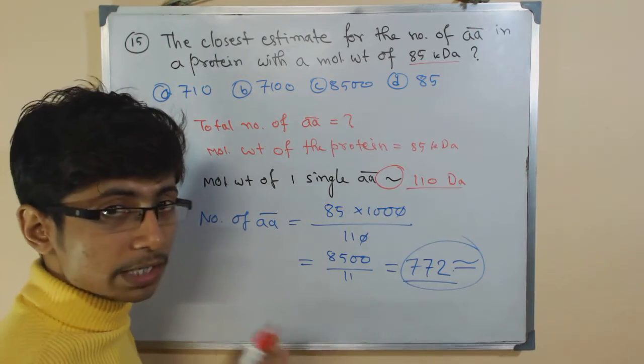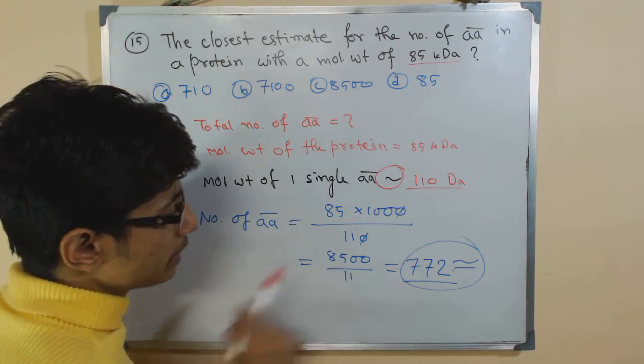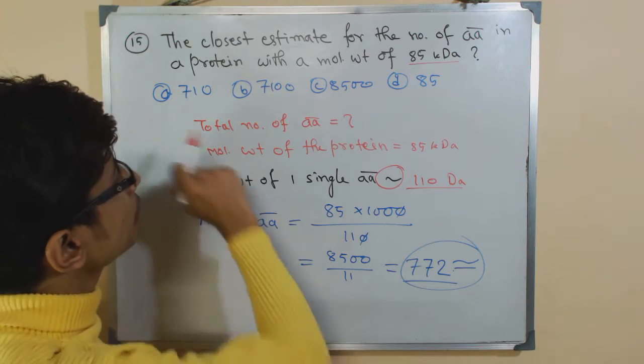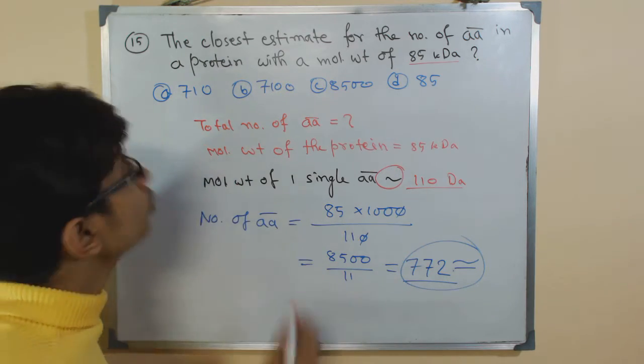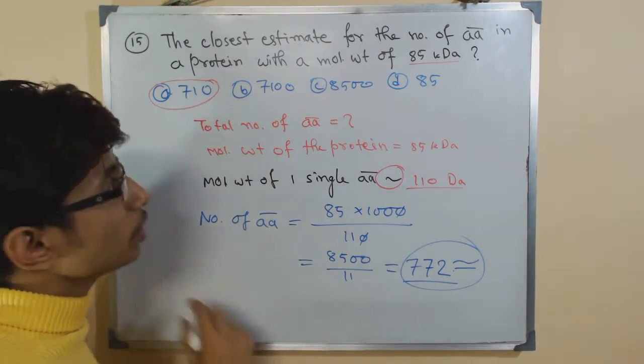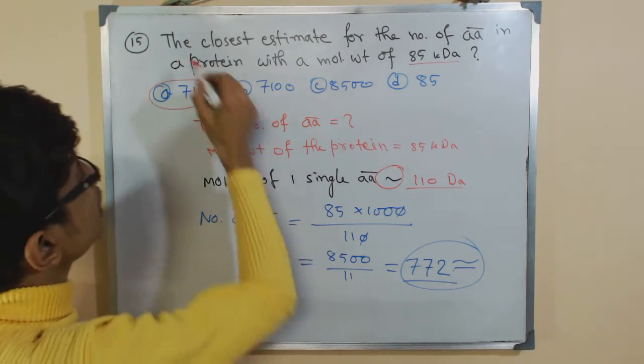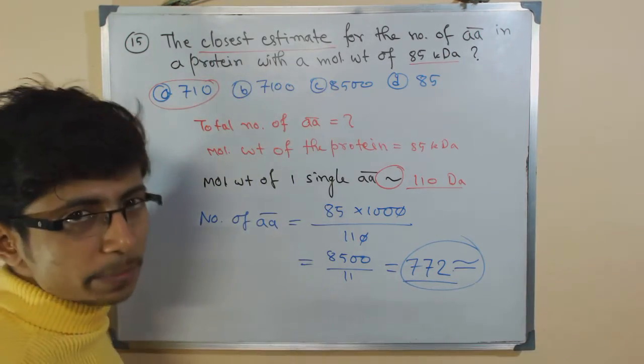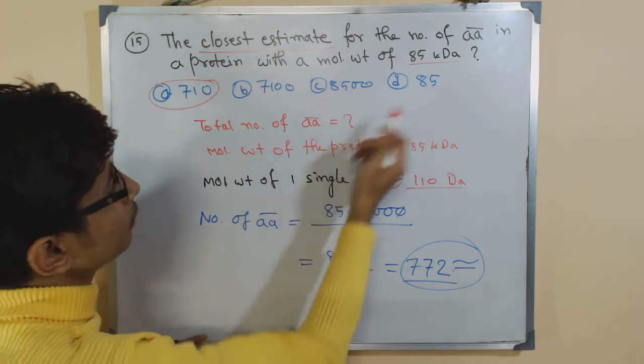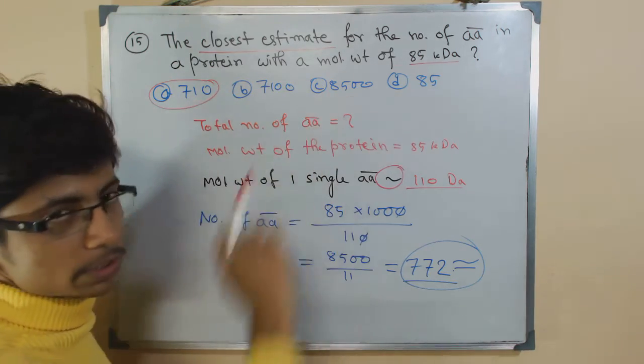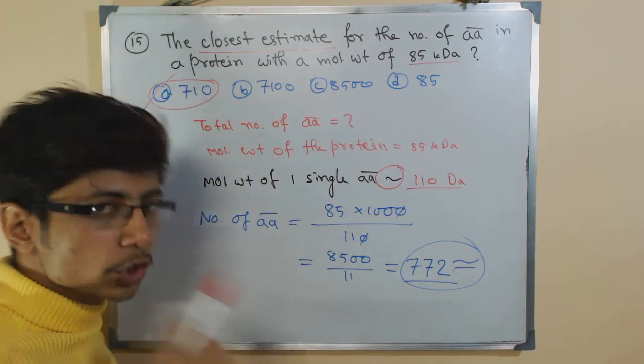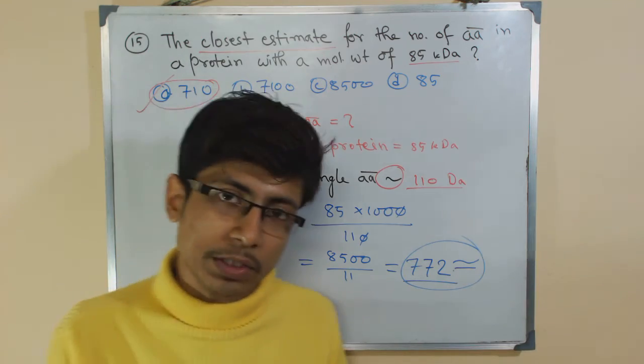Here it is 772 approximately. The options they give us neither contain 772, instead it contains 710. That's why the question asks for the closest estimate, and the closest estimate is obviously 710, not the rest of them. So option A should be the correct answer.